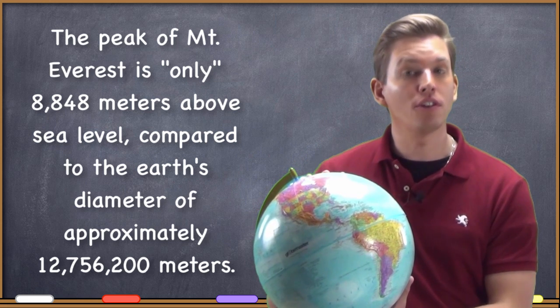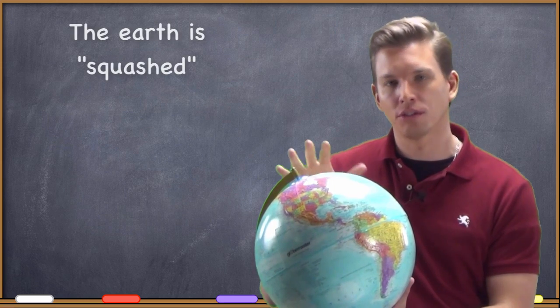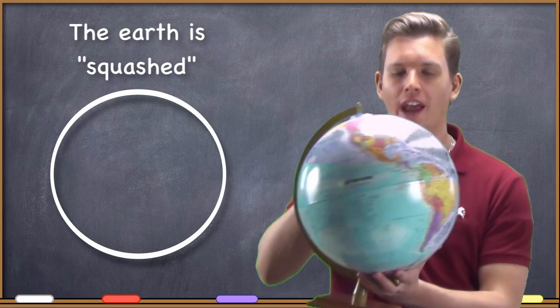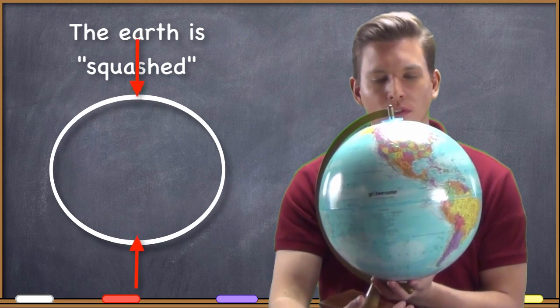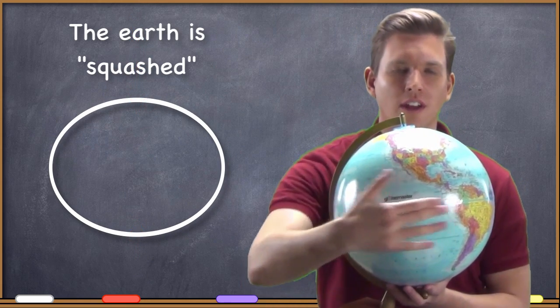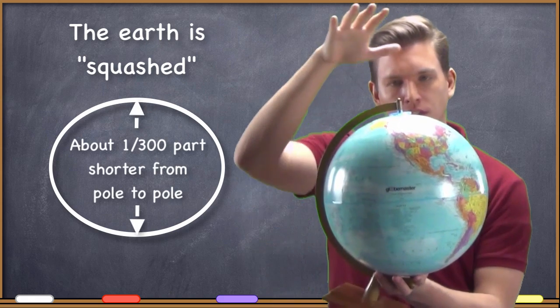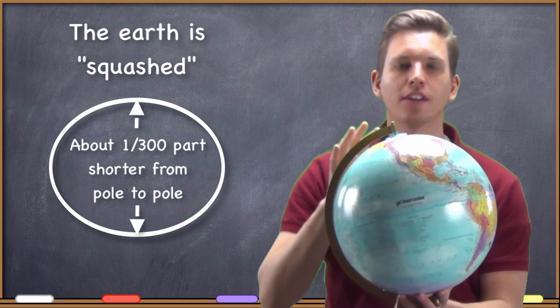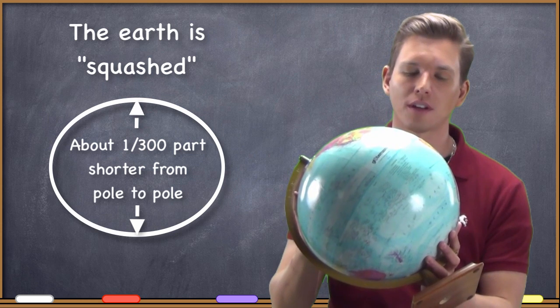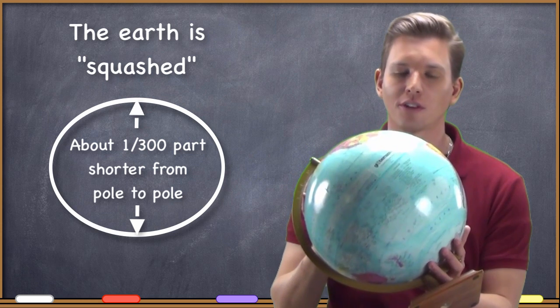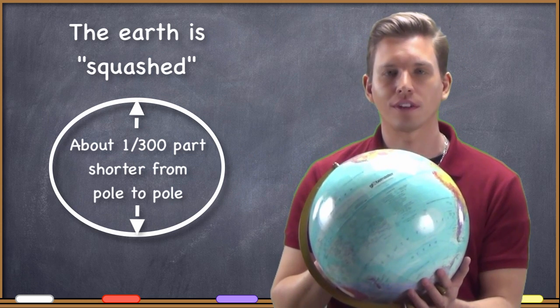One of the things that we do have to worry about, however, is the fact that the Earth is squashed. The Earth is actually a little bit shorter in the pole-to-pole direction than it is if you took the diameter across the equator. It's squashed in this direction. This is enough to make certain things, when you're doing geographic information systems, much more difficult than if you were just working with a perfect sphere.